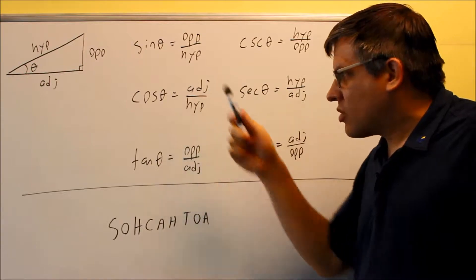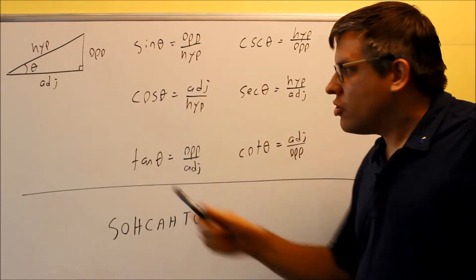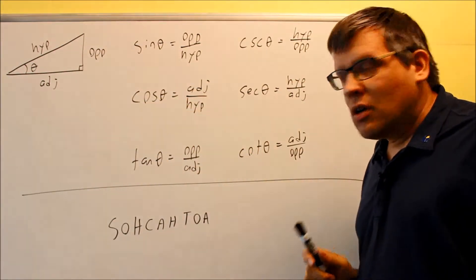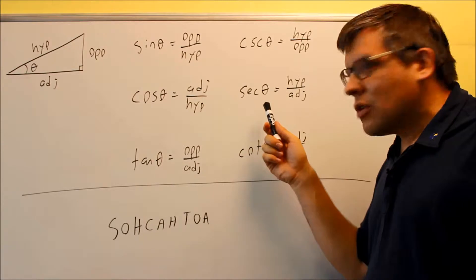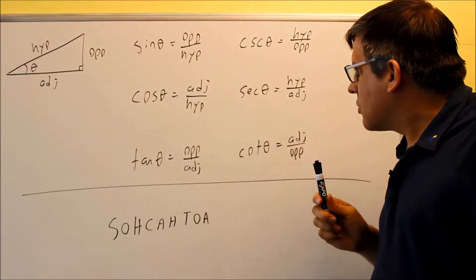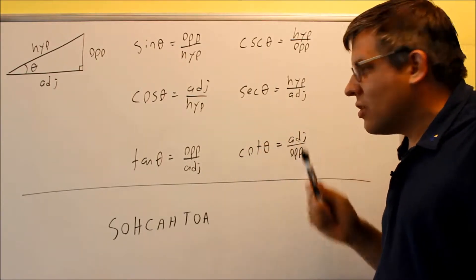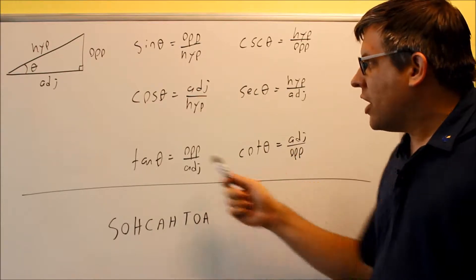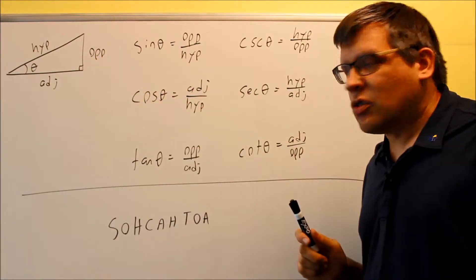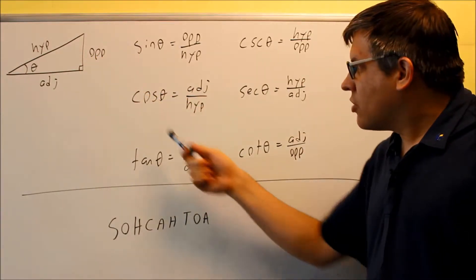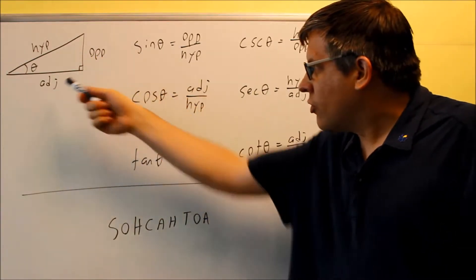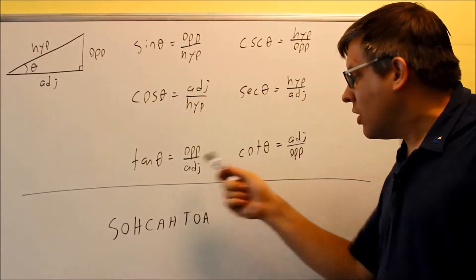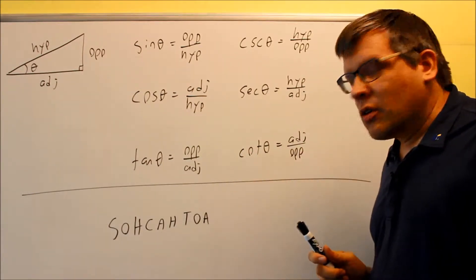Then we have cosine. Cosine is the adjacent over hypotenuse — that is its definition. Secant is the reciprocal, so hypotenuse over adjacent. Then we have tangent and cotangent, which do not involve the hypotenuse at all. Tangent is opposite over adjacent, and cotangent is adjacent over opposite. Again, these are reciprocals of each other.